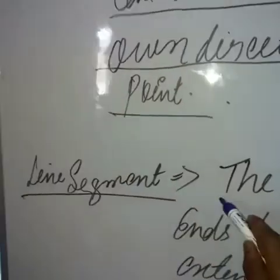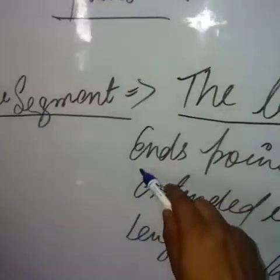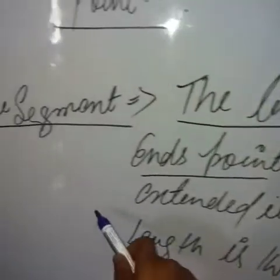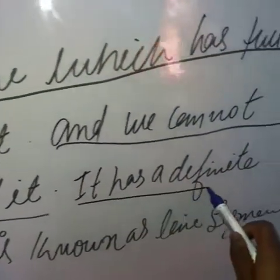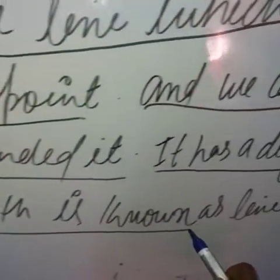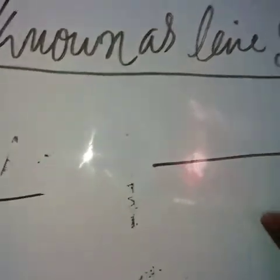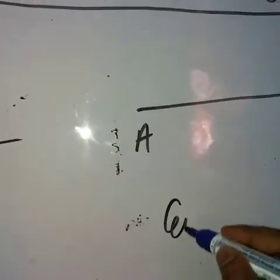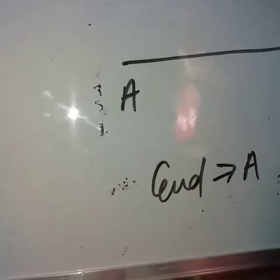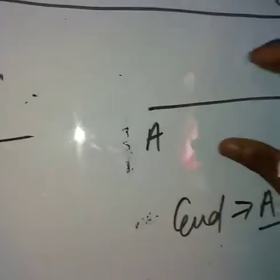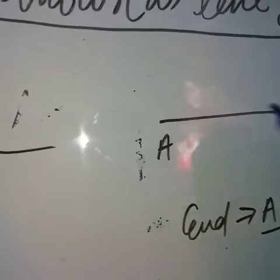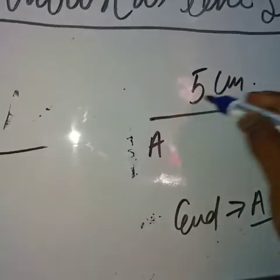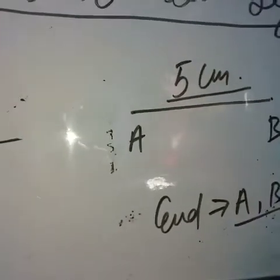Another type of line is a line segment. A line segment is a line which has two end points and we cannot extend it — it has a definite length. For example, AB is a line segment with two end points A and B. Its length is 5 cm. We cannot extend it.